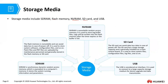The SDRAM is a synchronous dynamic RAM, which is like a computer's RAM — it stores the system running information and parameters. Flash is non-volatile, meaning when power goes off, the contents in flash memory remain there. It is used to store system software, configuration files, and other information.